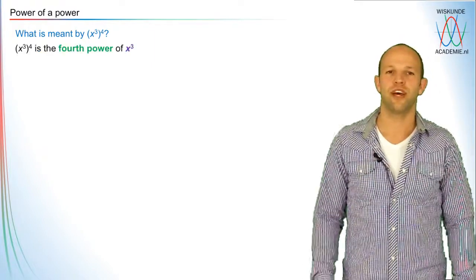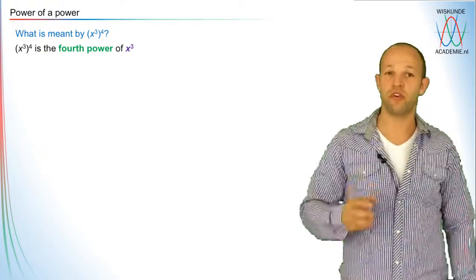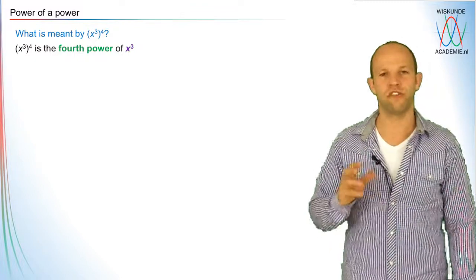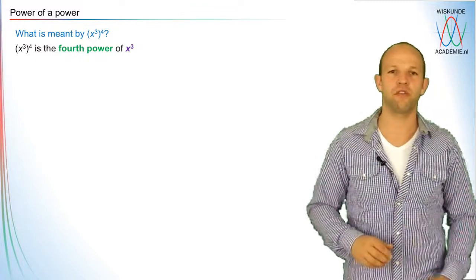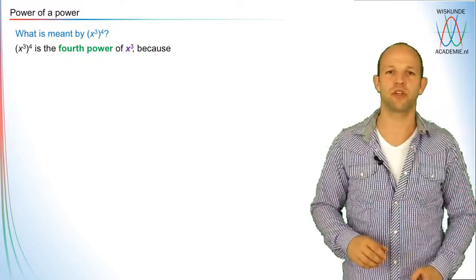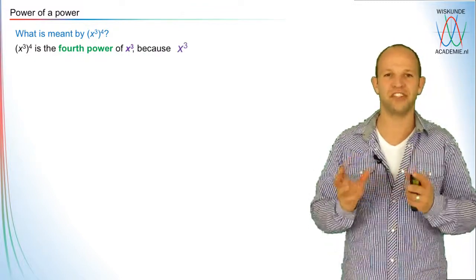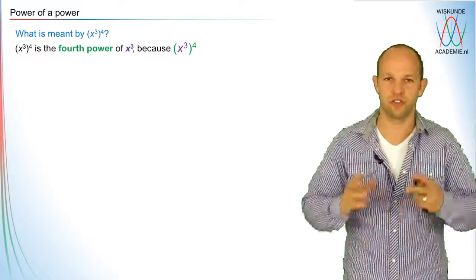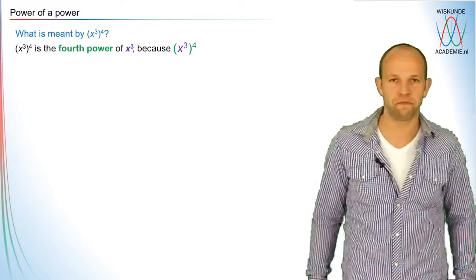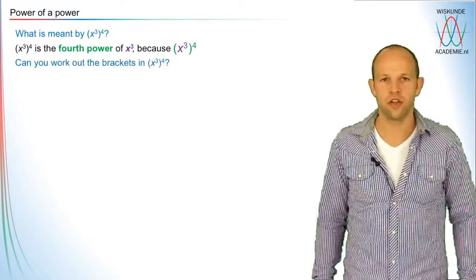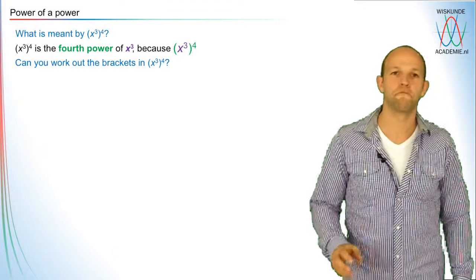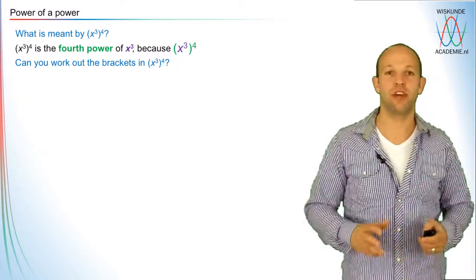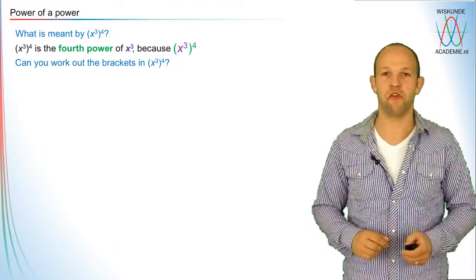So x to the power three, to the power four, is the fourth power of x to the power three. If you have x to the power three, then you have the fourth power of this in total. Can you work out the brackets in x to the power three, and that to the power four?